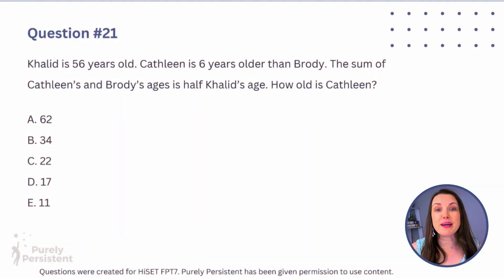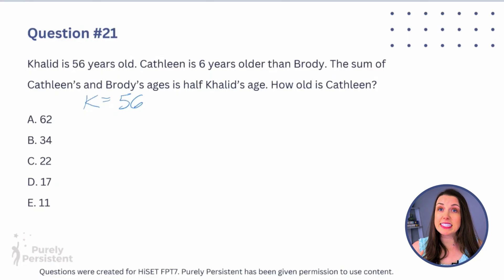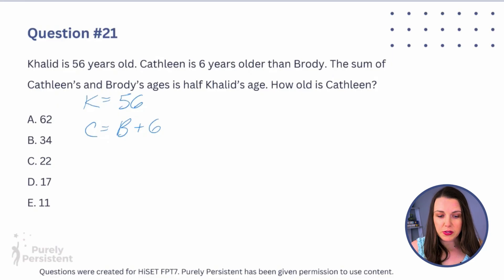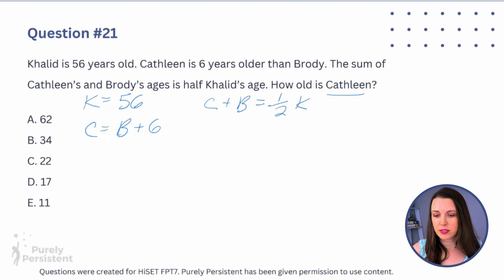Question 21: Khalid is 56 years old, so Khalid = 56. Kathleen is six years older than Brody, so Kathleen = Brody + 6. The sum of Kathleen and Brody's ages is half of Khalid's age, so Kathleen + Brody = ½ Khalid. We're looking for Kathleen's age.